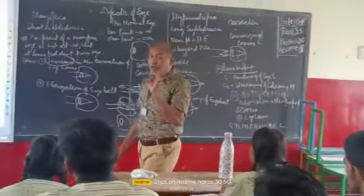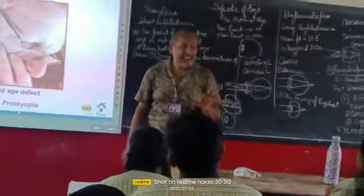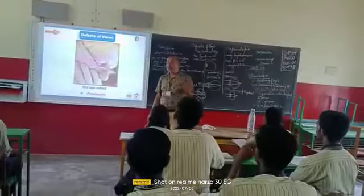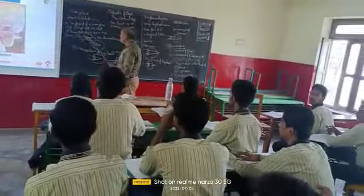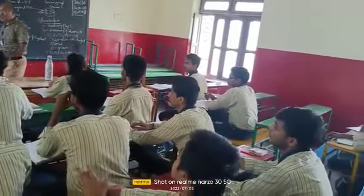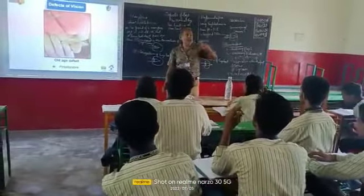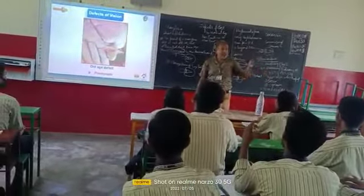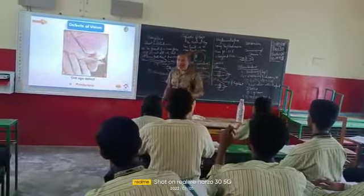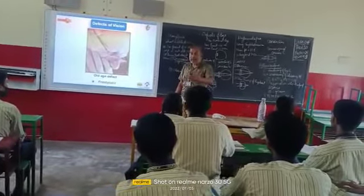Myopia means a person can see nearer things clearly but cannot see farther things clearly. This is opposite to farsightedness. Short-sightedness means the person can see nearby objects clearly but cannot see farther things clearly. This means the person's far point is not at infinity but at a limited distance from the eye. What are the reasons?